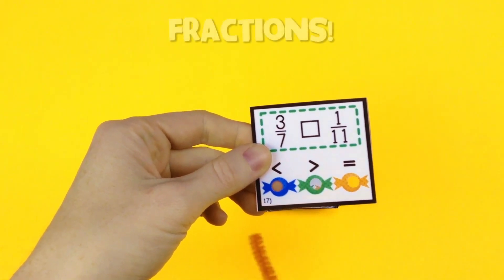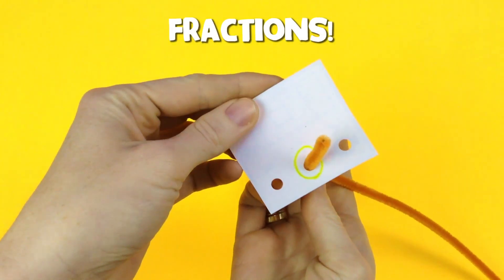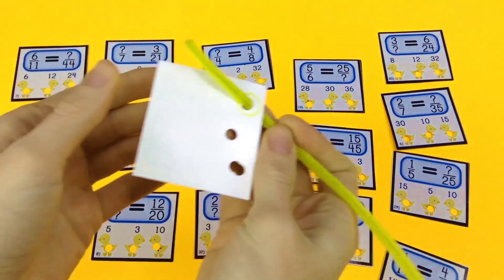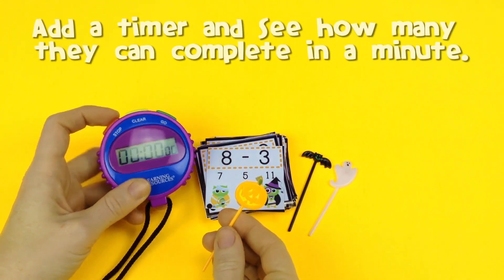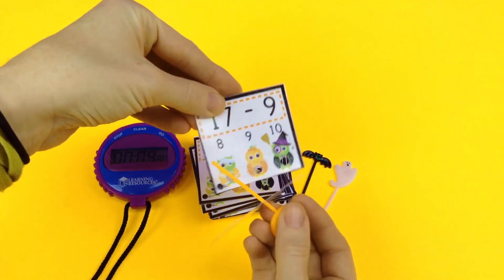Or if I have them with other students, I always tell them to have a partner check. This just reinforces accountability that they're really doing it right and that somebody else is checking them and not just themselves. But they can also do this independently by themselves for early finishers also.